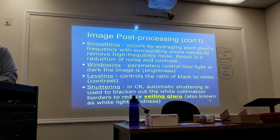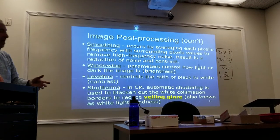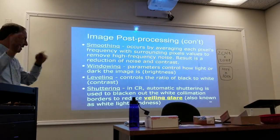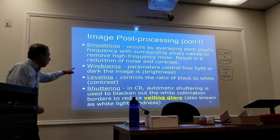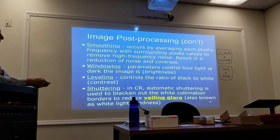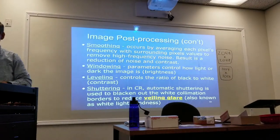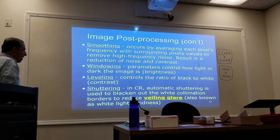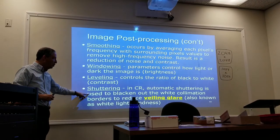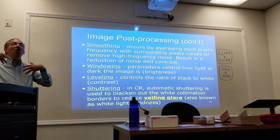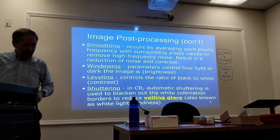Smoothing is the opposite of edge enhancement — you average each pixel's values to remove high-frequency noise. It reduces noise but also reduces contrast. Windowing and leveling are seen in CT: windowing is your brightness, how it goes from light to dark; leveling is your contrast ratio, black to white. Shuttering is used to black out the white collimation borders, reducing veiling glare, also known as white light blindness.